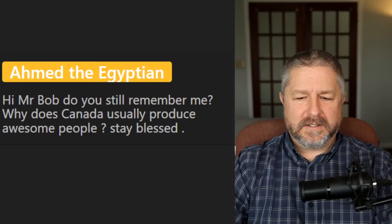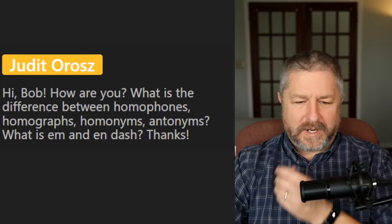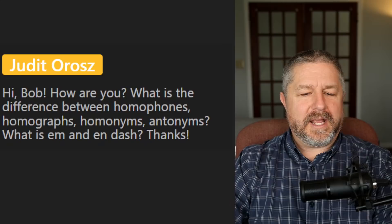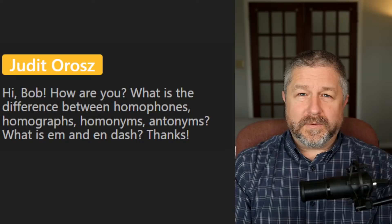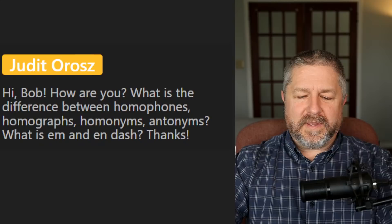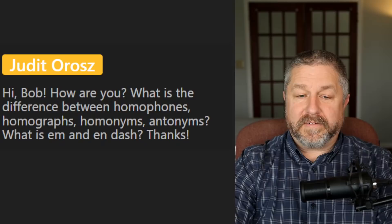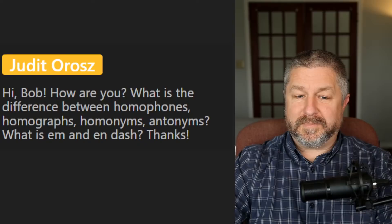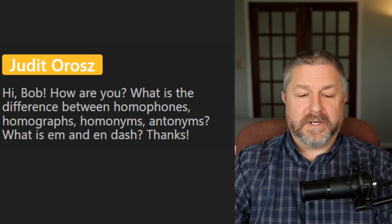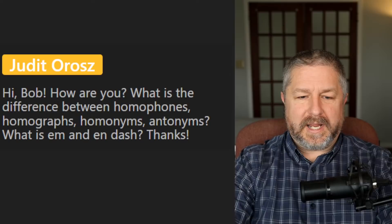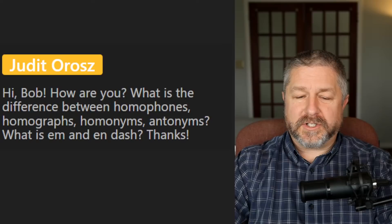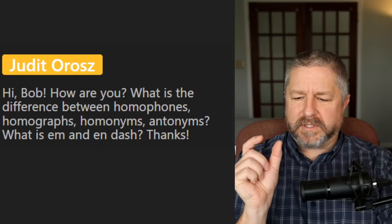From Judith: explain the difference between homophones, homographs, homonyms, and antonyms. A homophone: two words having the same pronunciation but different meanings. A homograph: two or more words spelled the same but not pronounced the same. A homonym is a broader category — two words having the same spelling or pronunciation but different meanings. An antonym is a word opposite in meaning to another, such as bad and good. An M-dash might be something to do with typing — I'm not 100% sure.